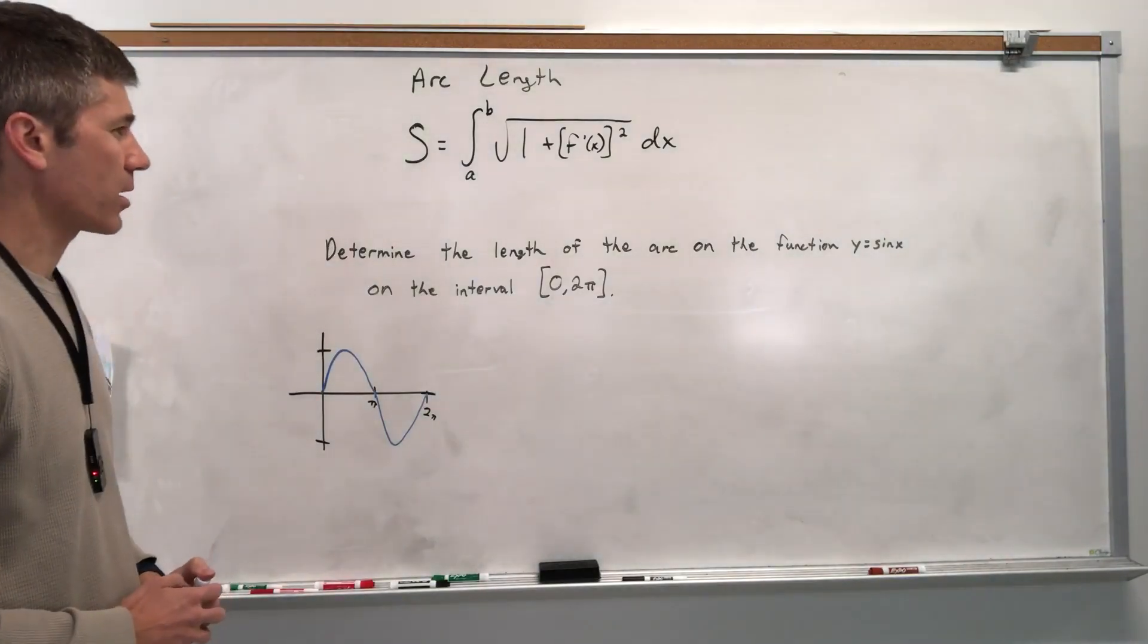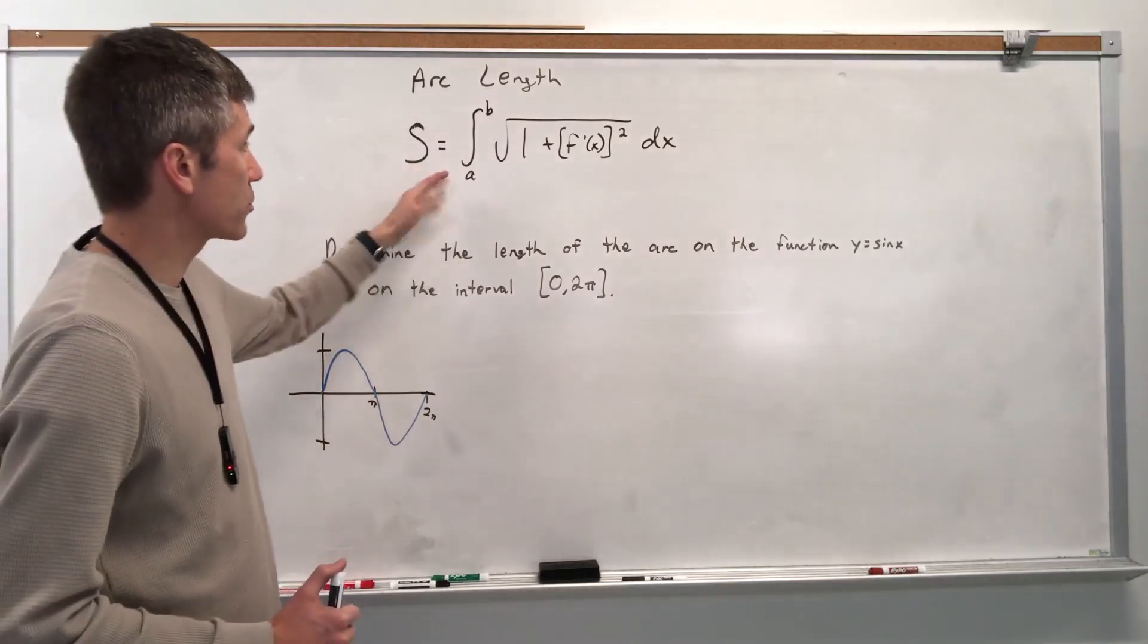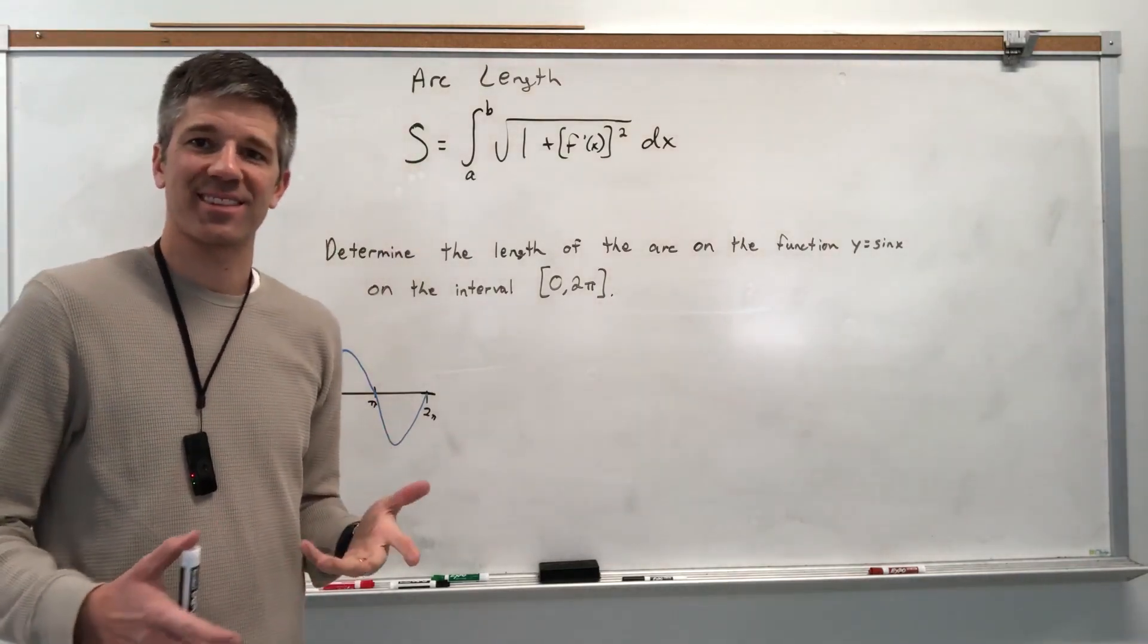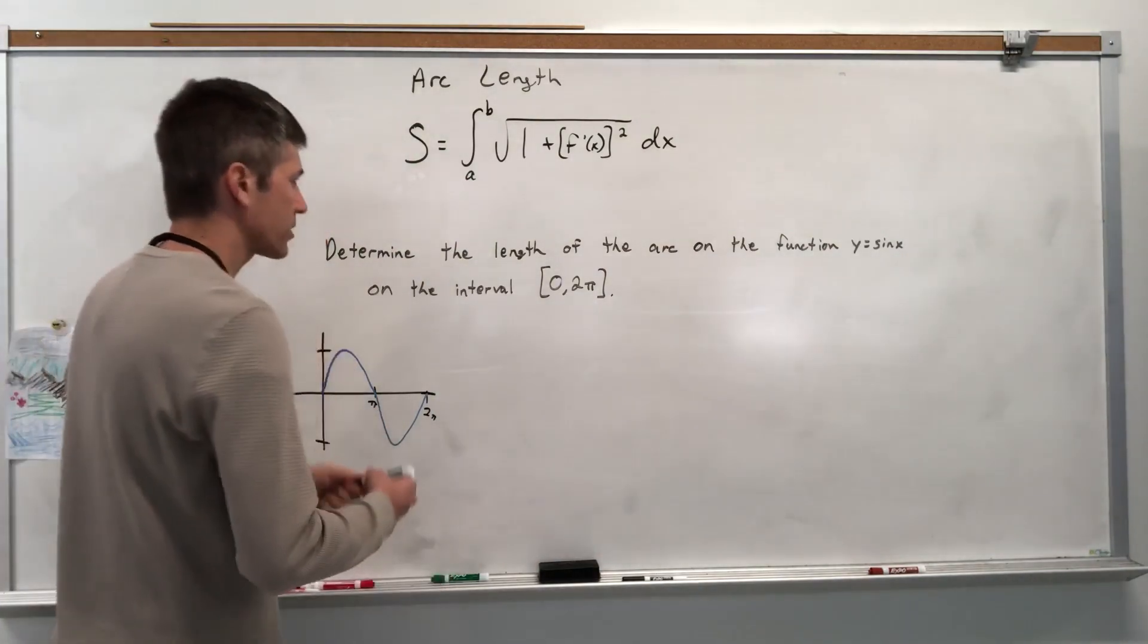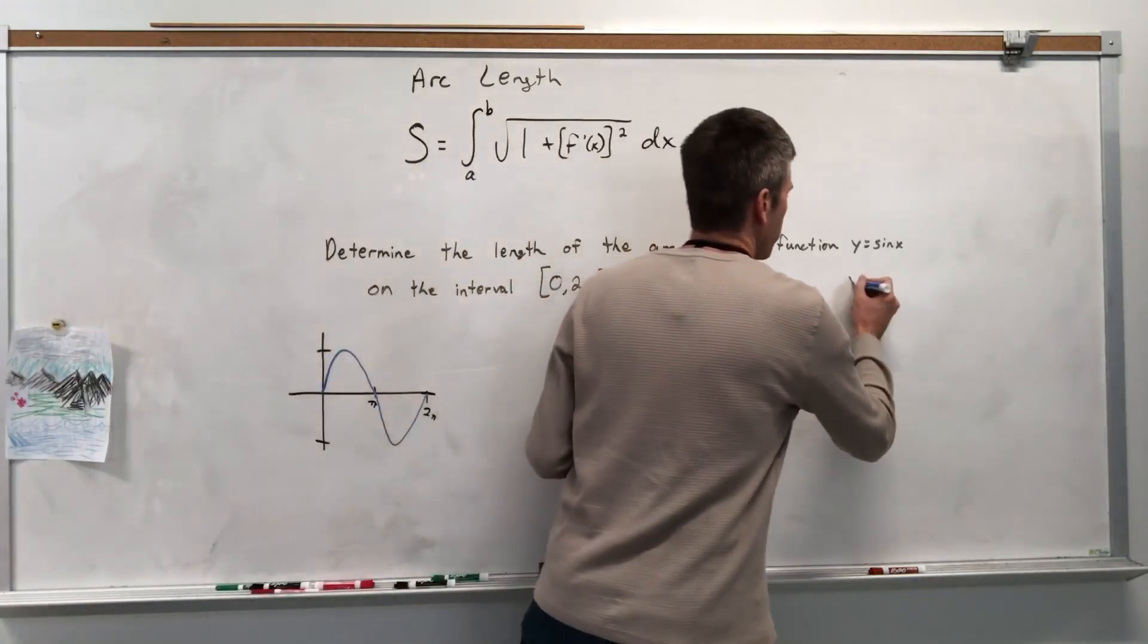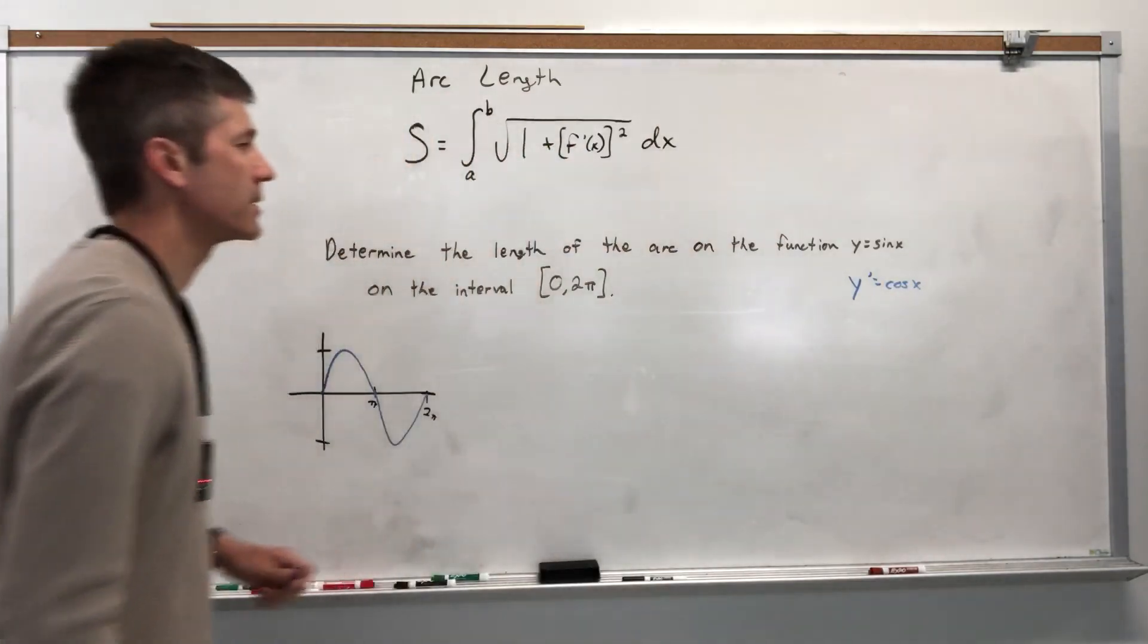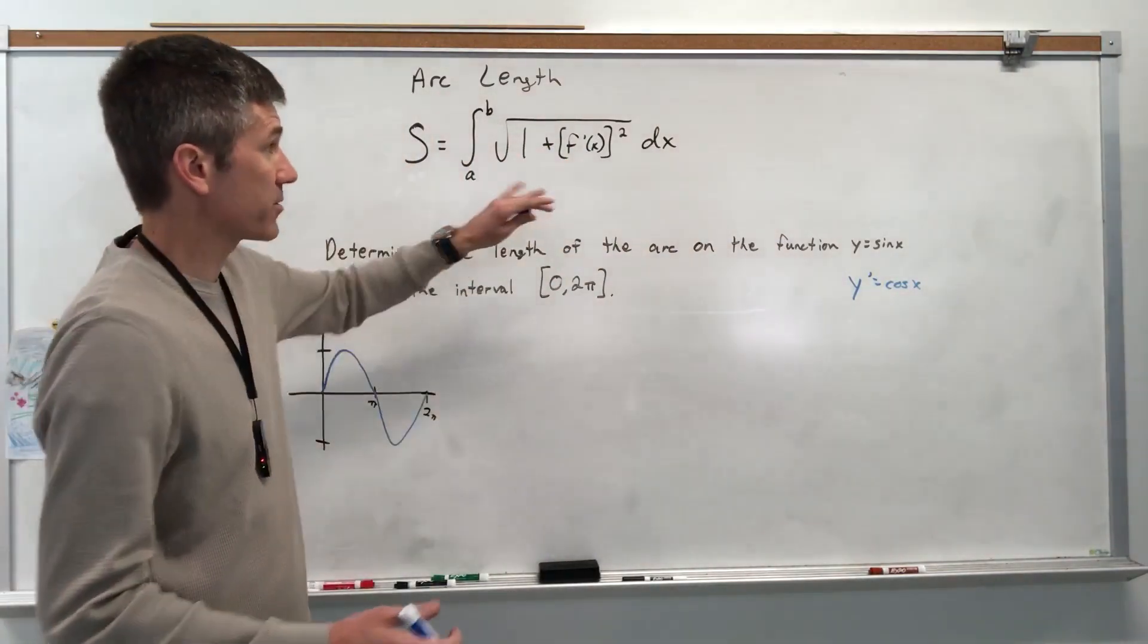Determine the length of the arc on that function, on the interval from 0 to 2 pi. Use this formula. S is often the letter we use to denote distance. Let's go ahead and start with the obvious. So y prime equals cosine x. And so I'm going to use y prime. I have to find the derivative, and then I have to square it.